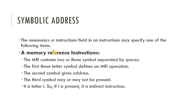Now regarding the instruction field — instructions may specify one of the following. As seen in previous videos, instructions have three types: memory reference instructions, register reference instructions, and input-output instructions. For memory reference instructions (MRI), the field contains two or three symbols separated by spaces. The first three-letter symbol defines the MRI operation, the second symbol gives the address, and the third symbol may or may not be present.